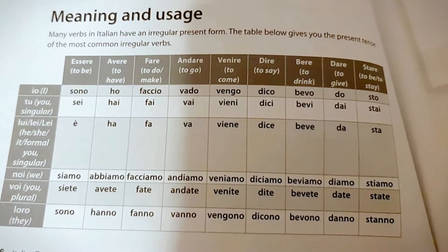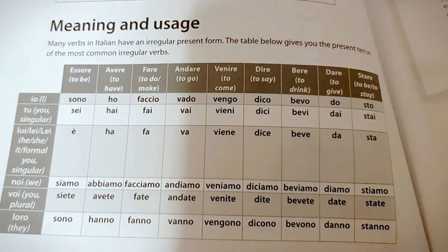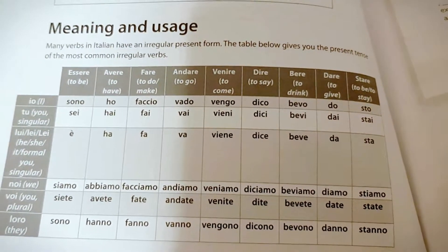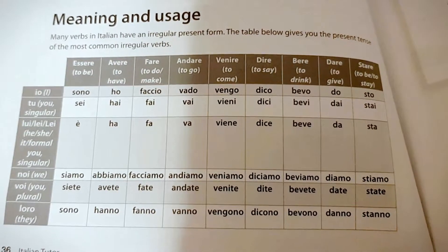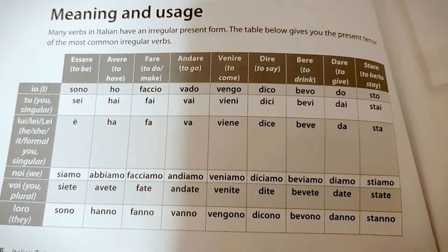Venire — to come. Io vengo, tu vieni, lui/lei viene, noi veniamo, voi venite, loro vengono.